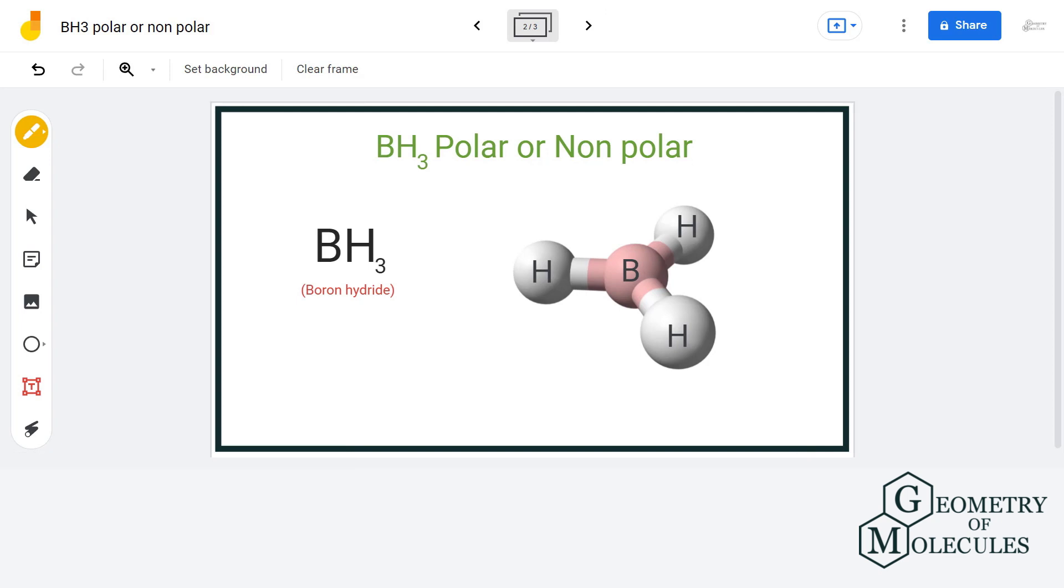Also, the molecular shape of BH3 is very symmetrical, which is trigonal planar. So even though there is slight polarity in the individual bonds, the net dipole moment is zero because of the symmetry in the structure. Therefore, we can say that BH3 is a non-polar molecule.